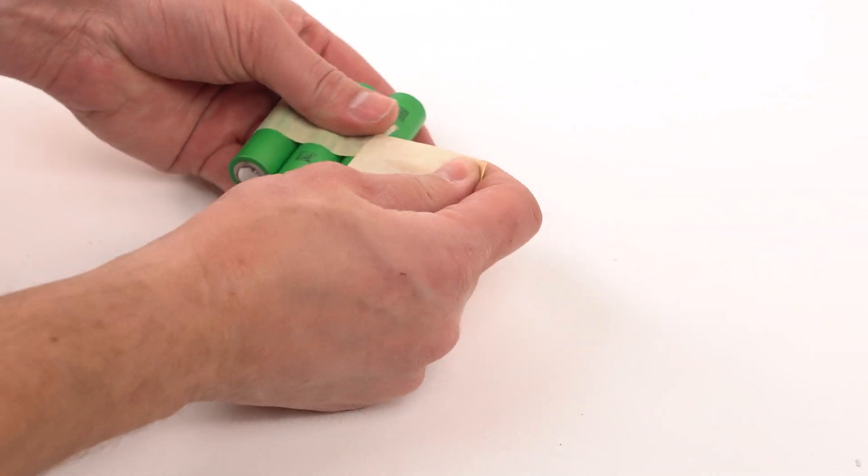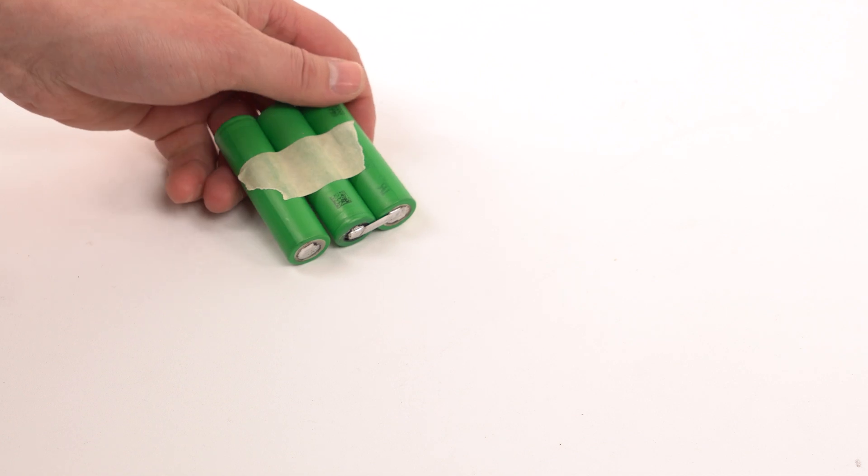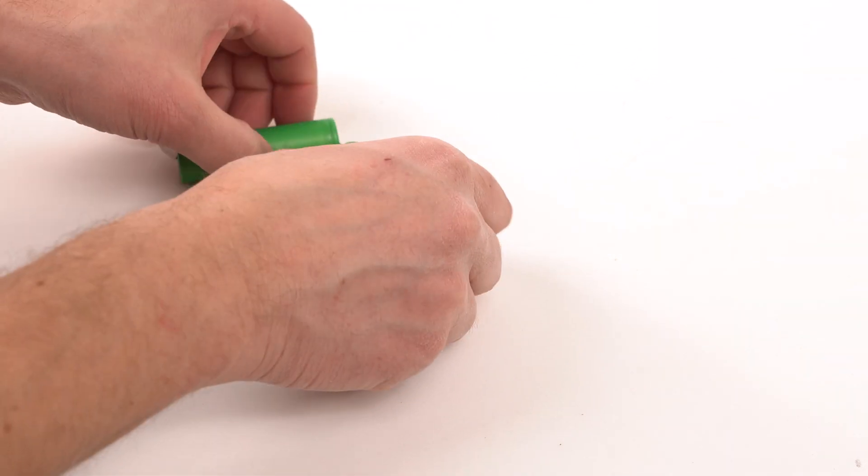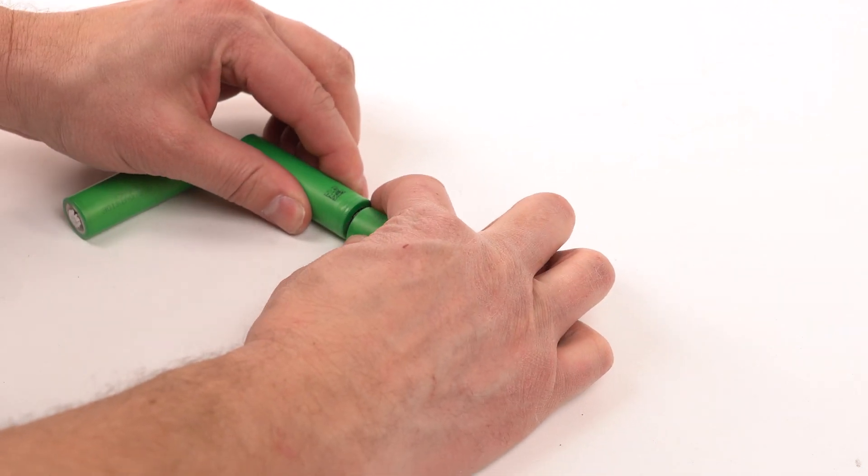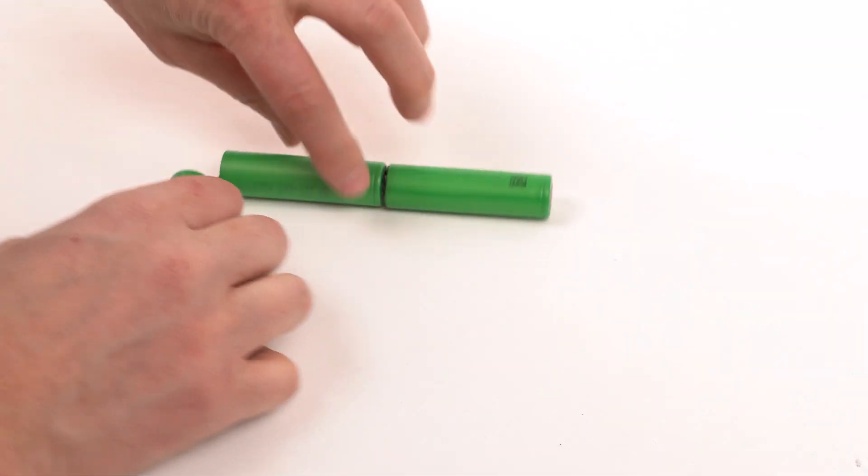Remove the tape from the cells and carefully unfold the pack to the final configuration you're looking for. Make any adjustments necessary to make sure you've got a straight stick pack.